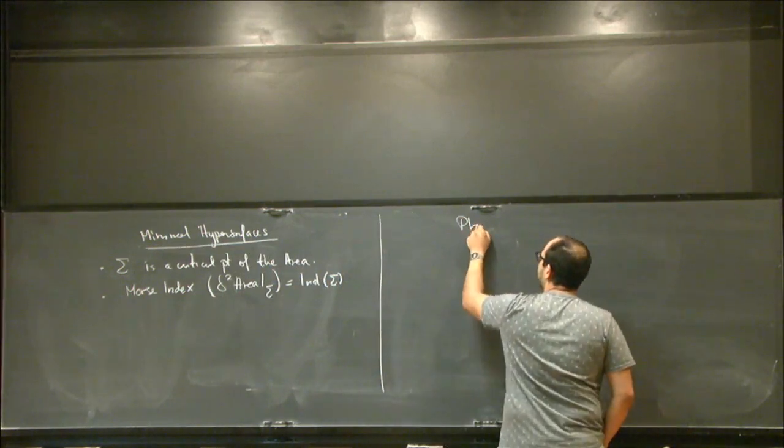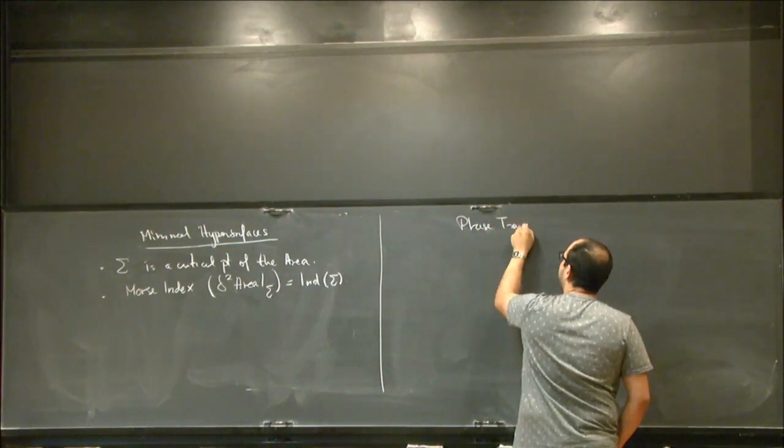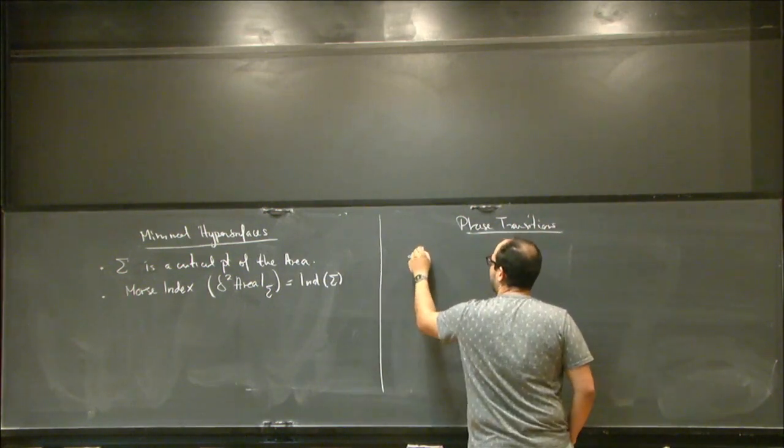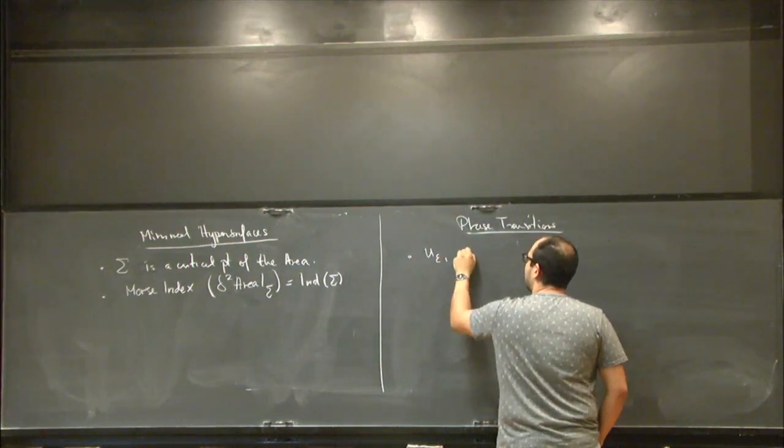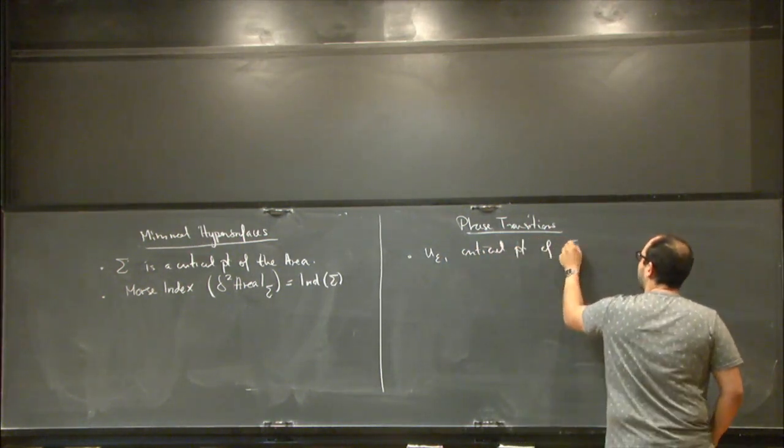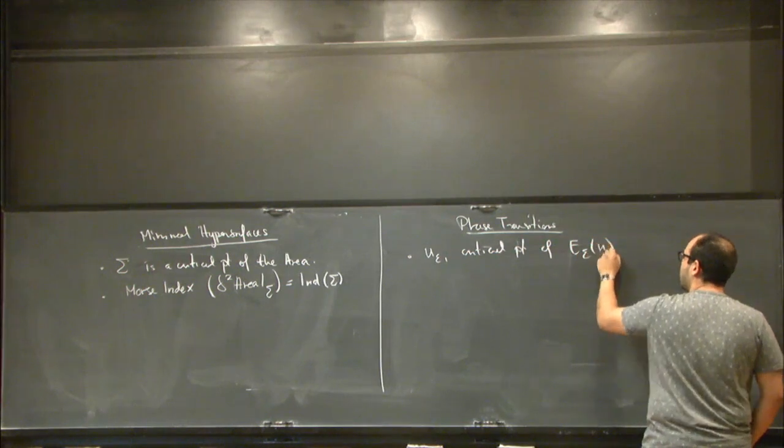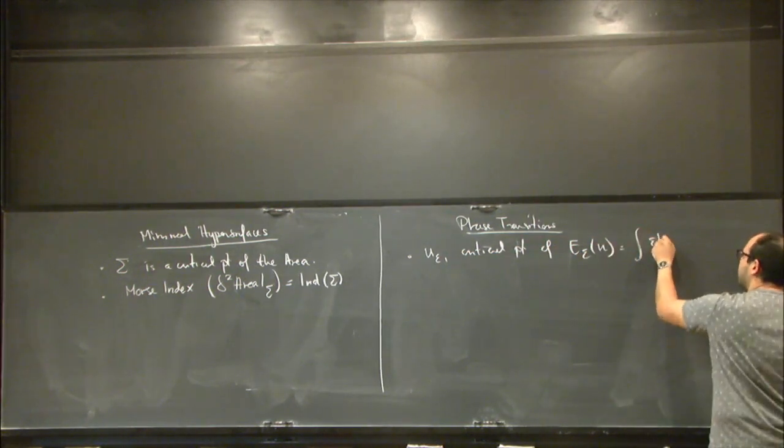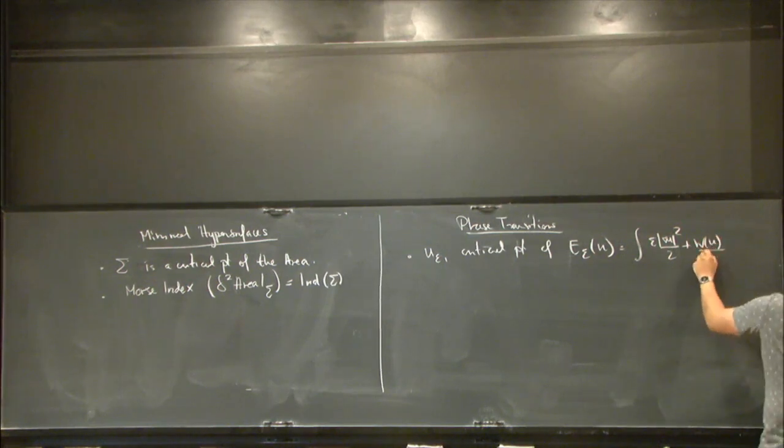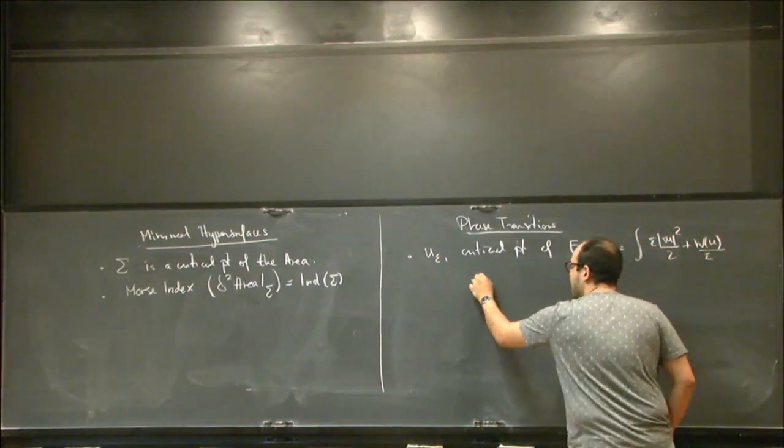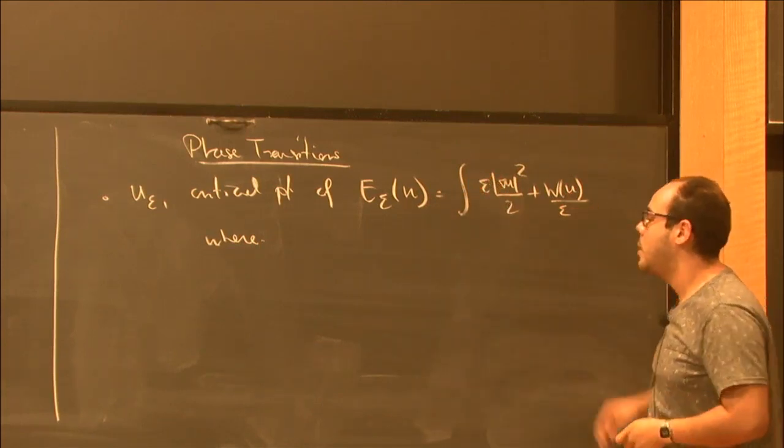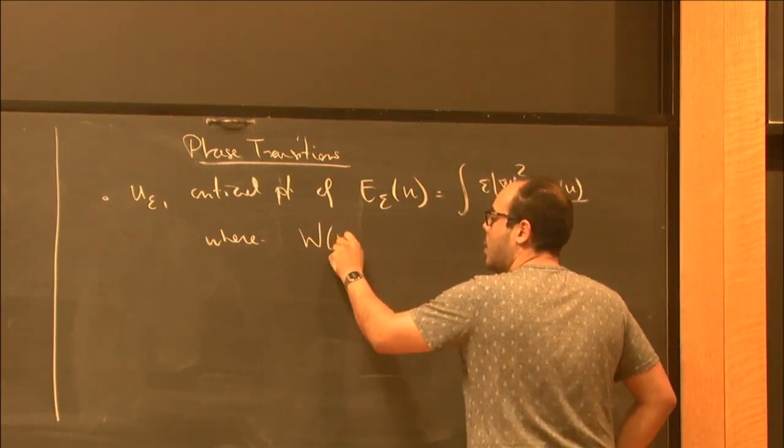So on this side, we have the phase transitions. By this, I mean critical points of u_epsilon, critical point of E_epsilon of u, which is this energy, where we have here the additional energy and a potential energy.